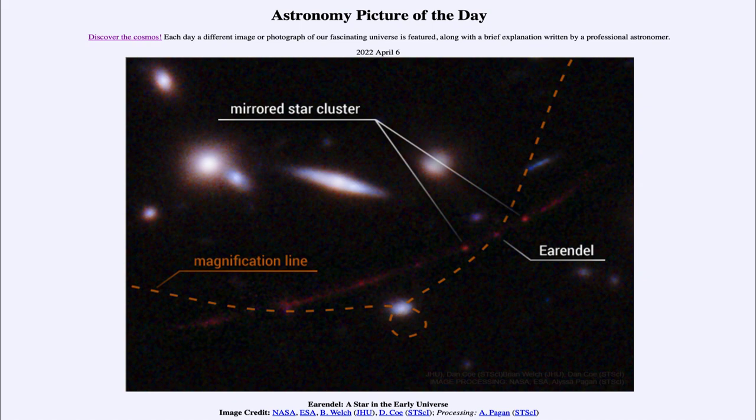And this is called gravitational lensing. And it is one of the properties predicted by Einstein's general theory of relativity that explains how light is bent when it passes through a gravitational field. Now, when we look at this, we see that Earendel is right on the magnification line.